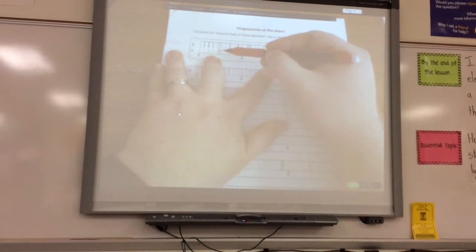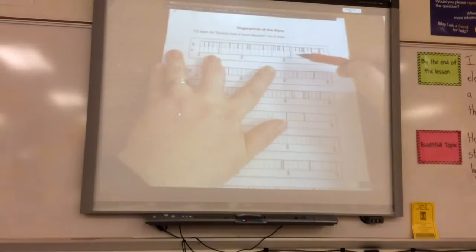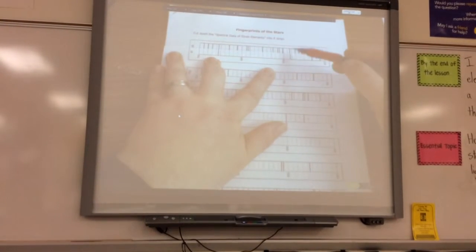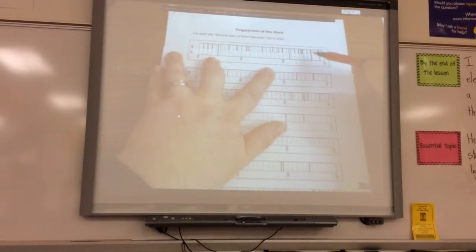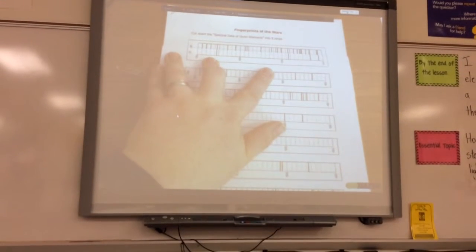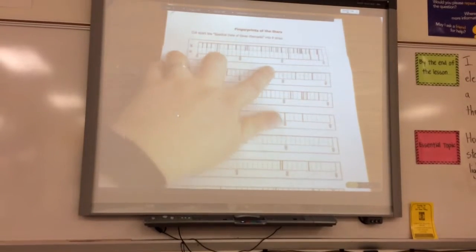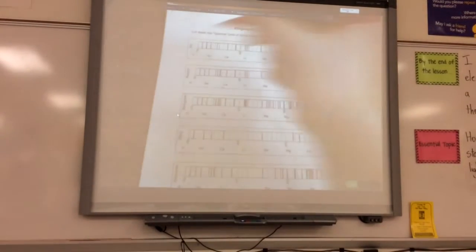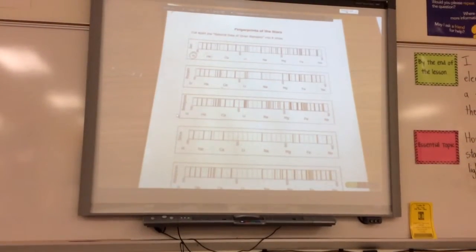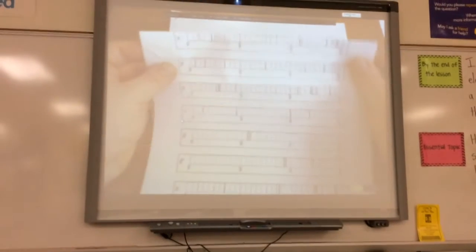Yes. Now I'm going to continue down hydrogen to the next black line right here. Does the Sun have that black line? Yes. And there's two more. Does the Sun have these last two big black lines? Yes. So hydrogen matches the Sun. That means the Sun does have hydrogen. So I'm going to come right here and I'm going to circle it. I've got hydrogen.